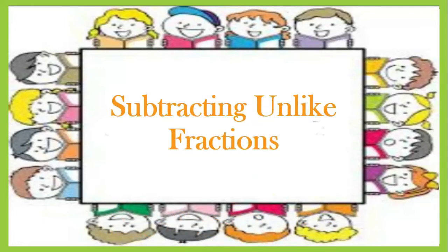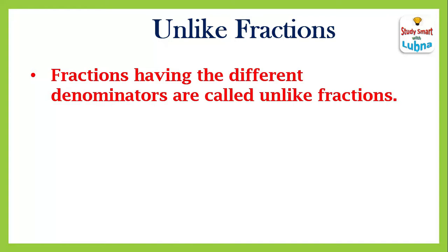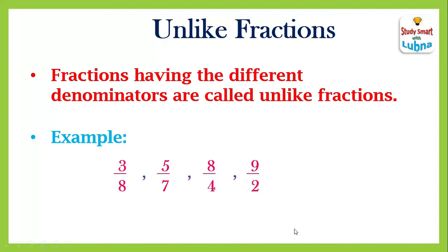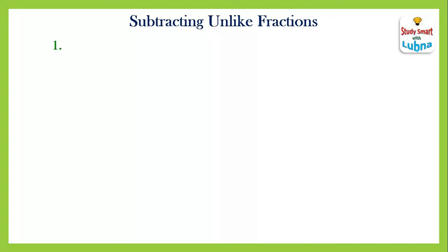Welcome students. Today we are going to learn about how to subtract unlike fractions. Unlike fractions are fractions having different denominators. For example, three upon eight, five upon seven, eight upon four, and nine upon two — all these fractions are unlike fractions because they have different denominators. Now we are going to learn how to subtract unlike fractions, meaning fractions with different denominators.